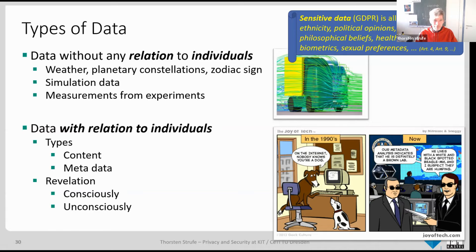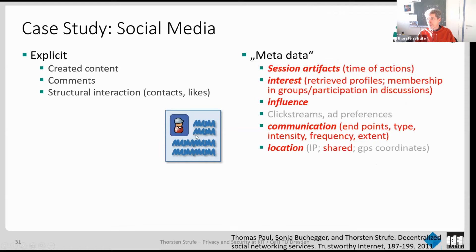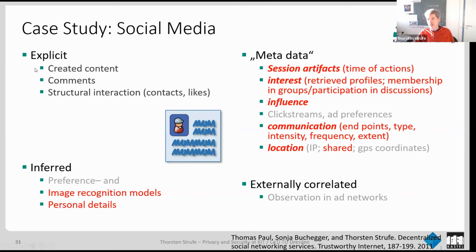A case study on social media: someone with an Instagram or Facebook profile knowingly shares content, comments, likes, and contacts — all conscious. But much is shared unconsciously: when they're active, what they're interested in, their influence, who communicates with them, their location via IP address or GPS coordinates in photos. Image recognition models and models on personal details can be trained on this data. And the highlighted points — marked in red — aren't only accessible to Meta: anyone with a Meta account can crawl this data, infer all this information, and share with the whole world.